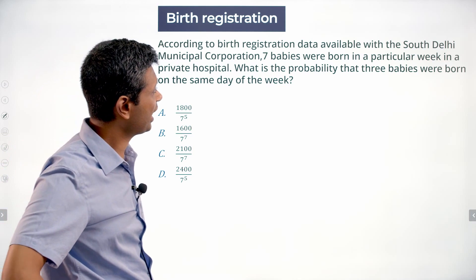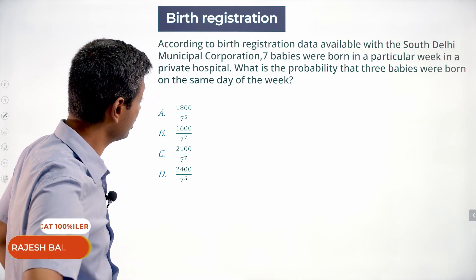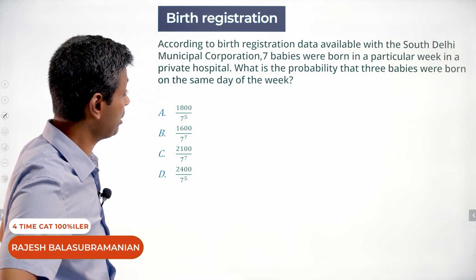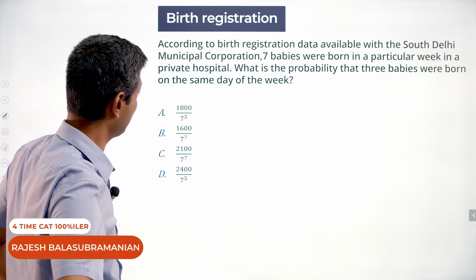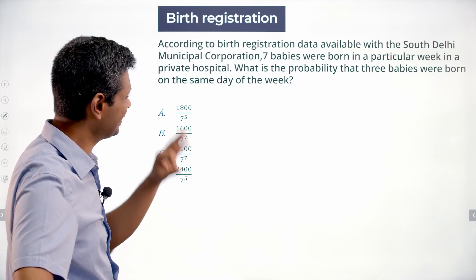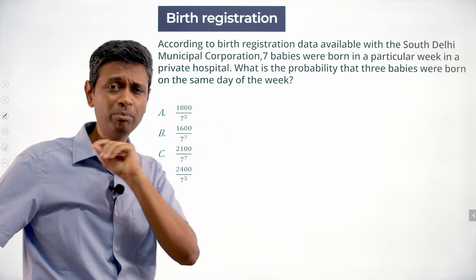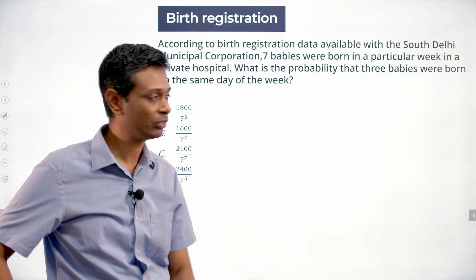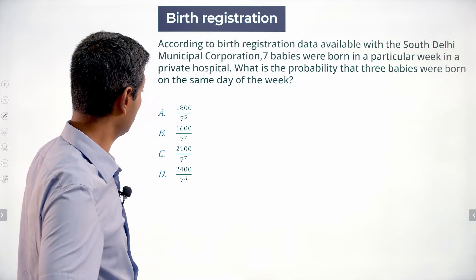According to birth registration data available with the South Delhi Municipal Corporation, 7 babies were born in a particular week in a private hospital. What is the probability that 3 babies were born on the same day of the week? Only 7 were born in that particular week.